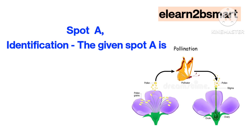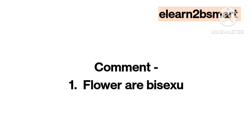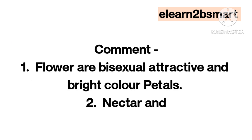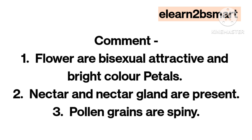Spot A. Identification: The given spot A is an insect-pollinated flower. Comment 1: Flowers are bisexual, attractive, and have bright-colored petals. Nectar and nectar glands are present. Pollen grains are spiny.